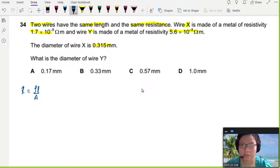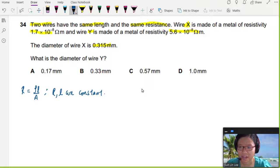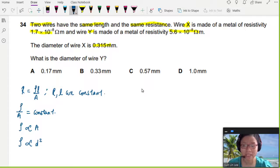You have the same length and the same resistance. So R and L are constants. If they are constant, what you have left is resistivity over area is equal to a constant value. So resistivity will be proportional to area, which is also proportional to diameter squared, because area is πd² over 4. So from this relationship,